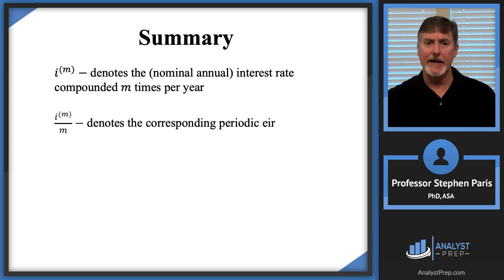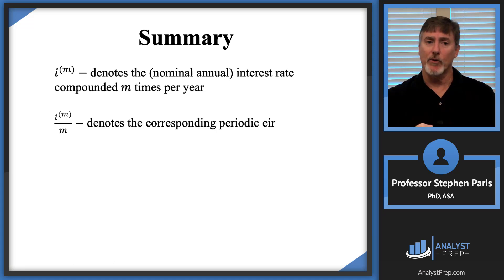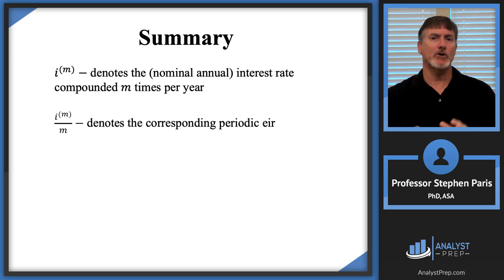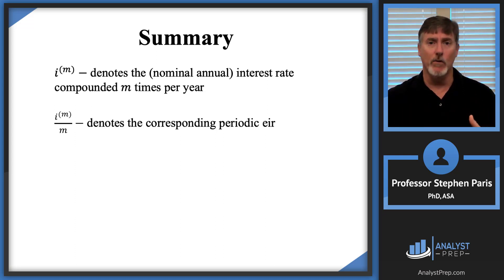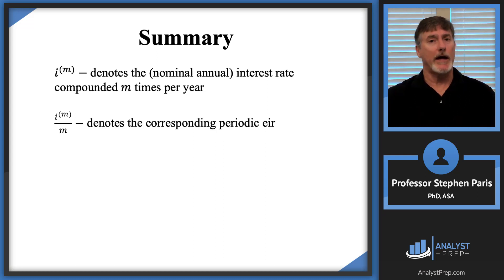In general, i^(m) denotes the nominal annual interest rate compounded m times per year. You divide that rate by m to get the periodic effective interest rate for each of those m periods per year. Importantly, you always divide i^(m) by m — never by some other value n. You'll see this notation throughout the rest of this course and on actual exams. See you in the next video.